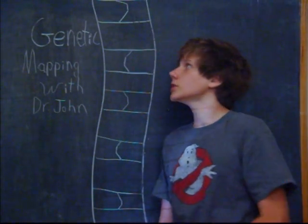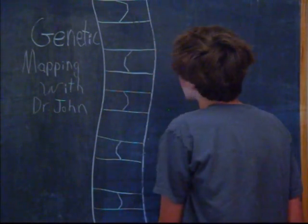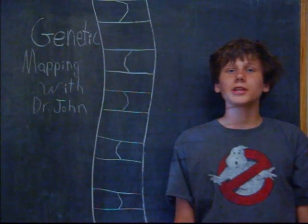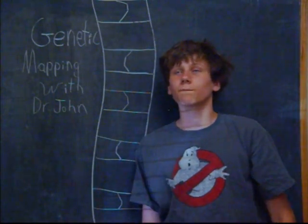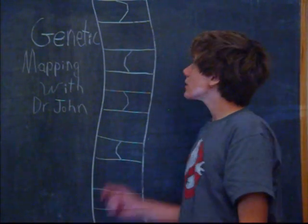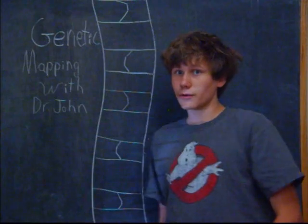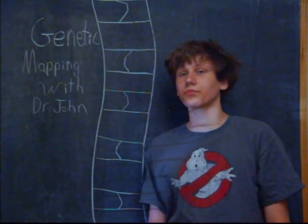During transcription, the nucleotides tell the ribosomes which amino acids to turn into proteins. A gene is the entire genetic map of the amino acids in a protein.